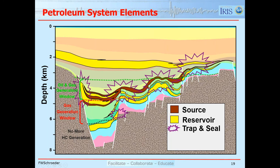I have to look for traps — I can see one, two, three anticlines, and a pinch-out which would be a combination trap: there's a structural component because there's dip, and a stratigraphic component because there's a pinch-out. So I'm considering three play elements: source, reservoir, and trap. I'll assume that above the reservoirs I have a good seal — that's my fourth play element. The fifth play element is hydrocarbon migration.